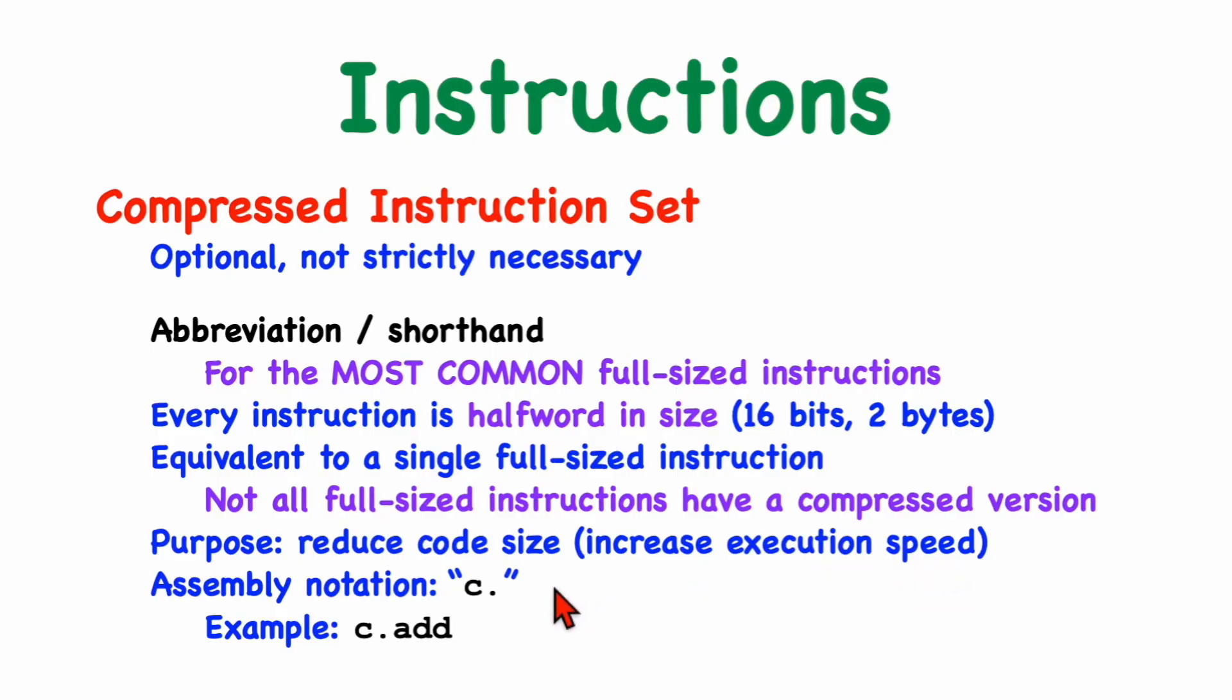And the purpose of including compressed instructions is to increase the execution speed. As far as assembly language programming goes, the compressed instructions can be identified easily because they all begin with C and a period. And here's an example of the add instruction with the compressed version shown here.